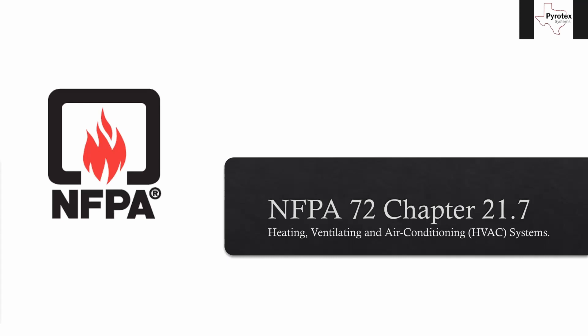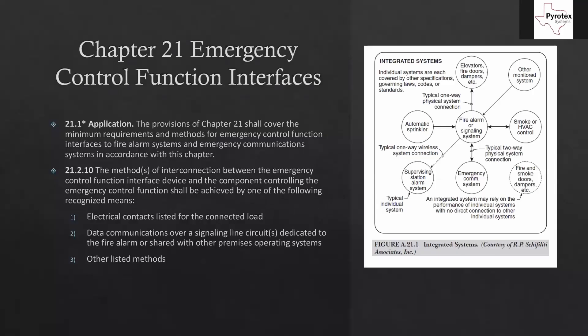There's also the annex in the back where it explains all this stuff we've talked about. Looking at Chapter 21, sections 21.1 and 21.2 cover some general things about emergency control function interfaces. The provisions of Chapter 21 shall cover the minimum requirements and methods for emergency control function interfaces to fire alarm systems and emergency communication systems. The emergency communication system is fire alarm system plus voice, and it can also include things like tornado warnings integrated into it.